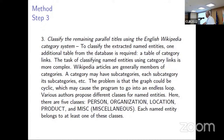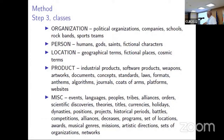I have chosen five classes: person, organization, location, product, and miscellaneous. Each named entity belongs to at least one of these classes. Organization includes political organizations, companies, schools, rock bands, sports teams, etc. Person includes humans, gods, saints, and fictional characters. Location covers geographical terms, fictional places, and cosmic terms. Product covers industrial products, software, weapons, and so on. Miscellaneous is everything else.